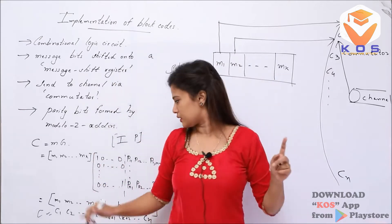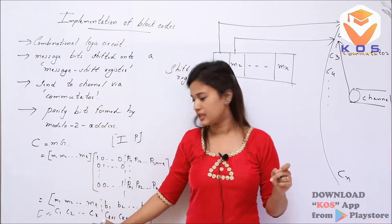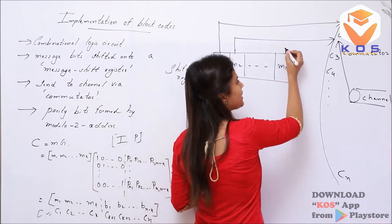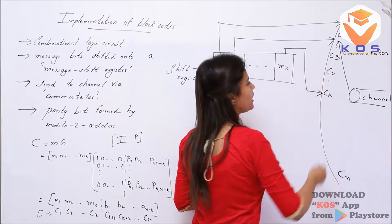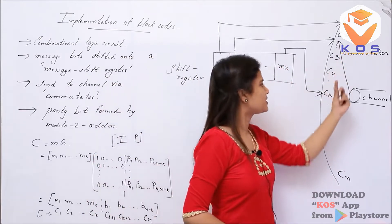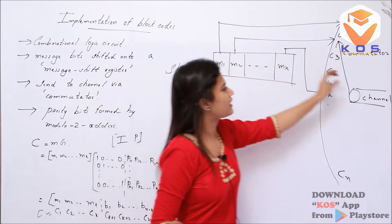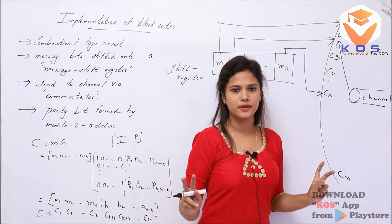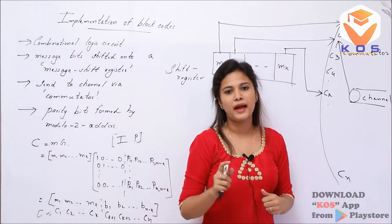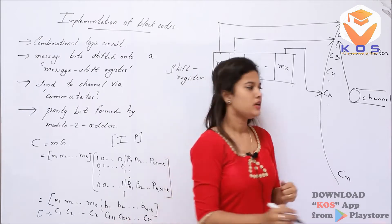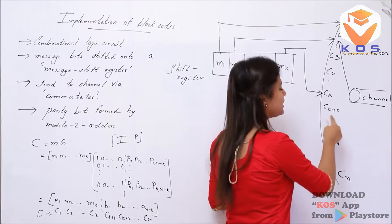If we get Mk, the code is Ck. So the first section — the first half of the code word — contains the message bits. The corresponding parity bits start from Ck+1, Ck+2, and up to cn-1, cn-2, etc.